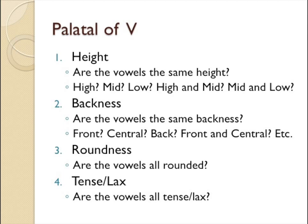If height and backness are not giving you any help, then consider the roundness of the vowel. Ask yourself: are the vowels all rounded, or are the vowels all unrounded? If you answer yes to either, that is one of the restrictions. Finally, if roundness is not helping you, ask yourself: are the vowels all tense, or are they all lax? If they're all tense or all lax, that would be your restriction. After going through all four questions, you should be able to find at least one restriction. The sound that has the restriction will not be your underlying form; the sound that does not have any restriction — before or after — will be your underlying form, because it is in a broader environment.